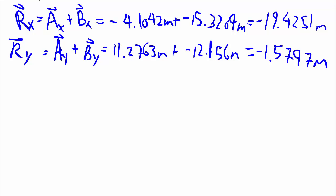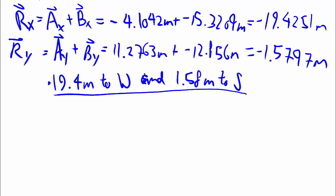So at this point, it's actually perfectly okay to say that your displacement is 19.4 meters to the west and 1.58 meters to the south. This would unambiguously define where you end up based on where you started. And notice how we didn't use negative signs. We refer back to the real world description of west and south.